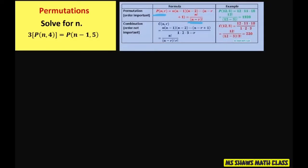Alright. So what we're going to do is rewrite this using our formula. So we have 3, and then this formula here is going to be n factorial using this divided by n minus 4 factorial.